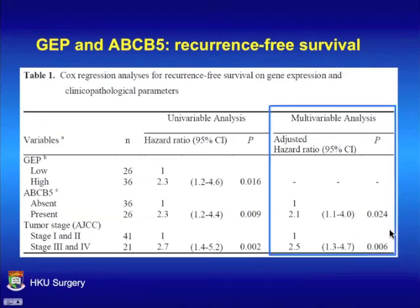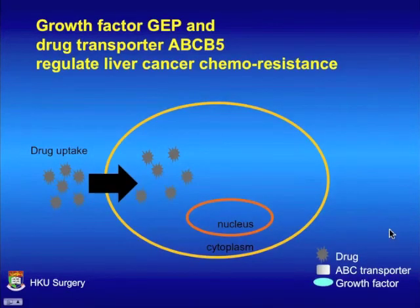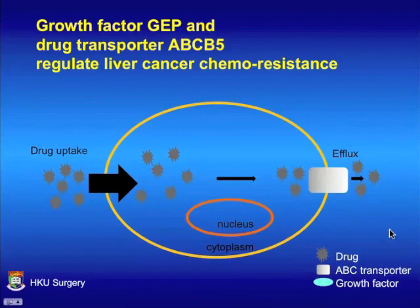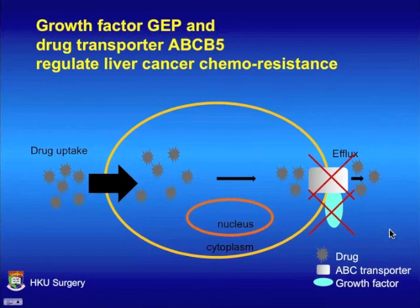In summary, the growth factor GEP and drug transporter ABCB5 regulate liver cancer chemoresistance. When cells are exposed to chemodrugs, cancer cells that divide rapidly are more susceptible to damage. But liver cancer cells expressing the drug transporter will efflux the drug, rendering them drug-resistant, and the growth factor GEP positively regulates the transporter ABCB5. Targeting this pathway in combination with chemotherapy could provide a novel treatment modality to eradicate aggressive cancer cells.